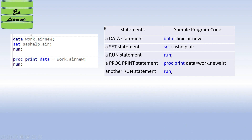Each line in a SAS program is one statement. In the data step program, the first statement is a data statement, the second is a set statement, and the third is a run statement. Each statement ends with a semicolon — that is a very important point. Likewise, proc statements also start with the 'proc' keyword and each statement ends with a semicolon.